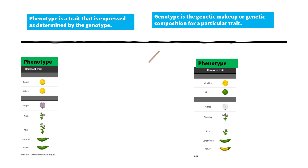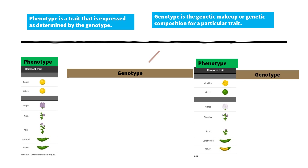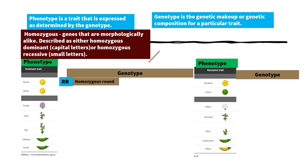Genotype is the genetic makeup or genetic composition for a particular trait. How are we going to write the genotype? First, identify the dominant trait. Between round and wrinkled seed, round is dominant, so we use the letter R. Homozygous round is represented by double capital R. Homozygous means the genes are morphologically alike — described as either homozygous dominant, represented by capital letters, or homozygous recessive, represented by small letters. So homozygous wrinkled is represented by double small letter r.